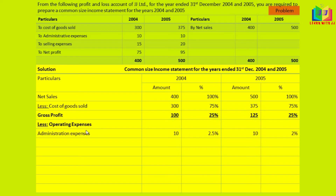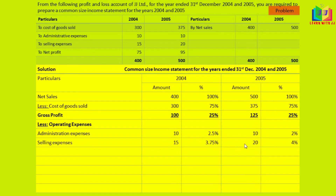Next are operating expenses. Administrative expenses: 10 divided by 400 is 2.5%, and 10 divided by 500 is 2%. Total operating expenses: 25 divided by 400 is 6.25%, and 30 divided by 500 is 6%.